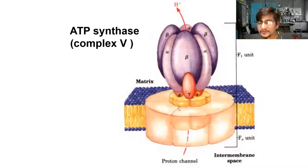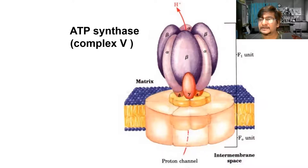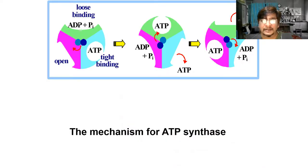ATP synthase has different subunits. The part embedded in the membrane is called Fo (water insoluble), and the part facing the matrix is called F1 (water soluble). Once protons move through Fo, it causes rotation, and that rotational energy is utilized to convert ADP + Pi into ATP. There is a loose binding site where ADP and Pi bind, and upon rotation ATP is created and released.